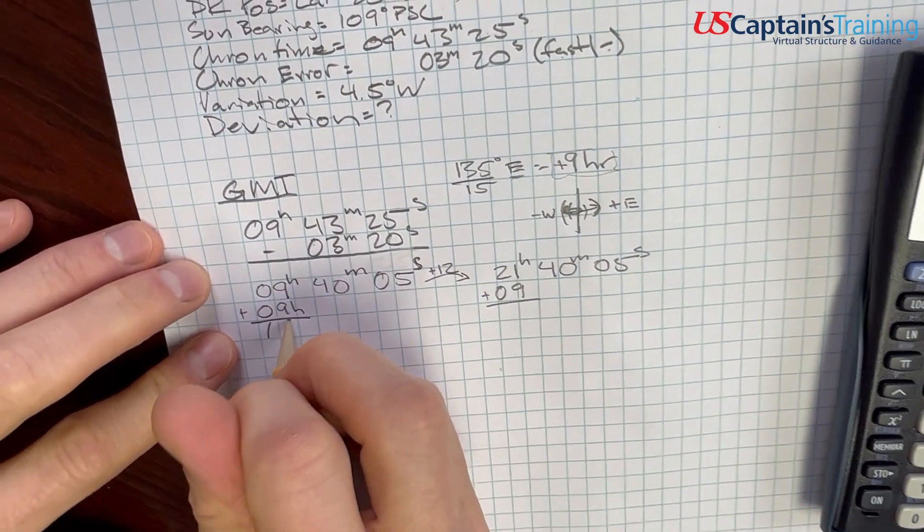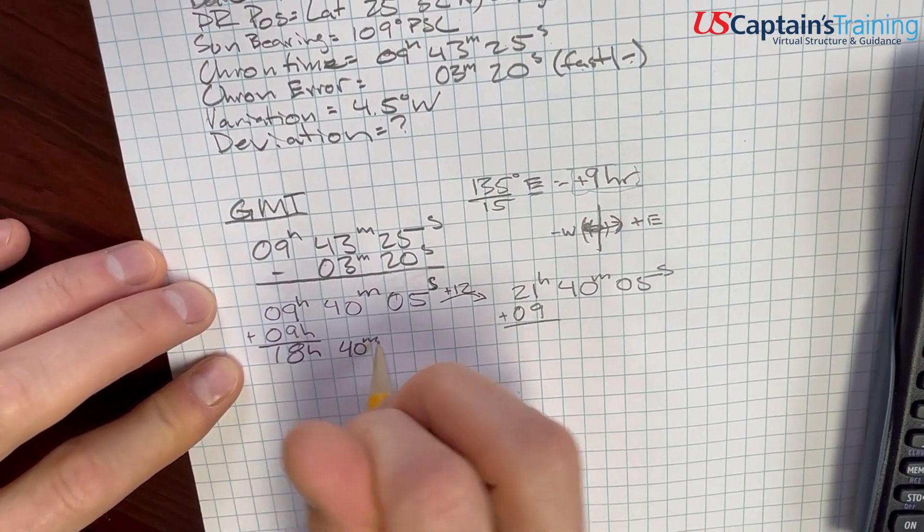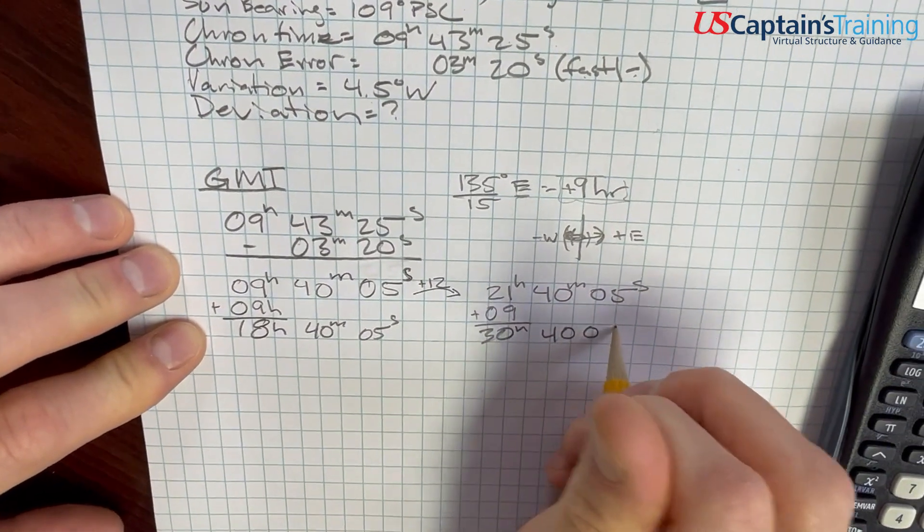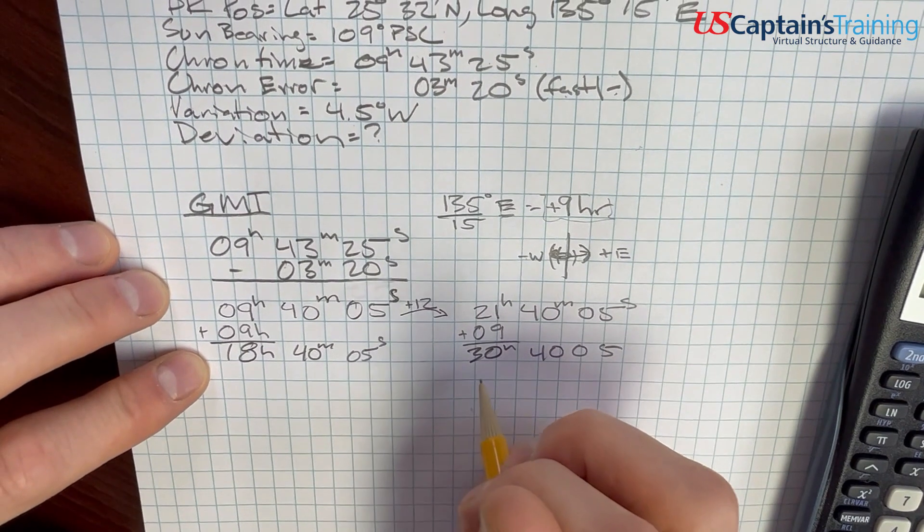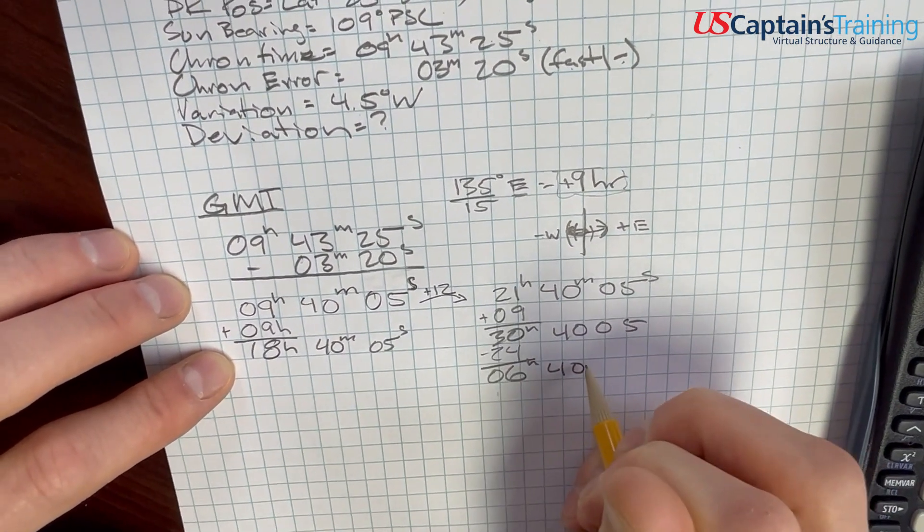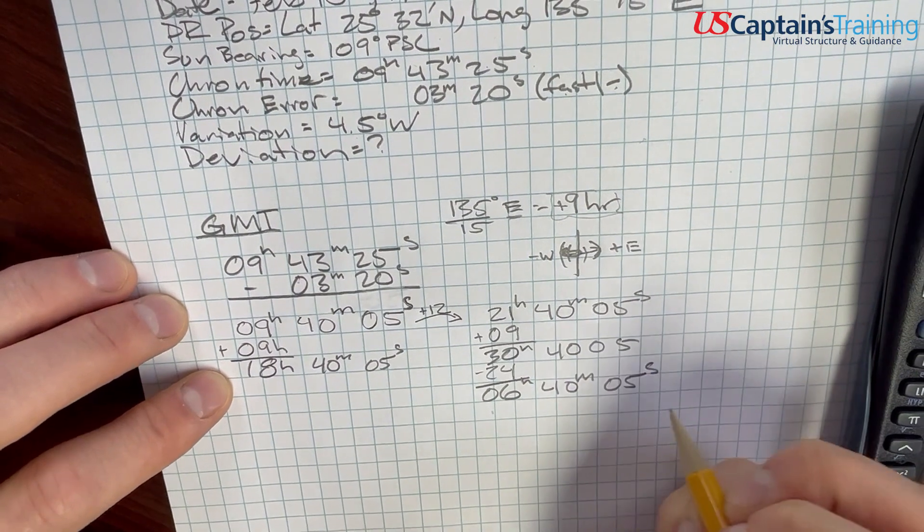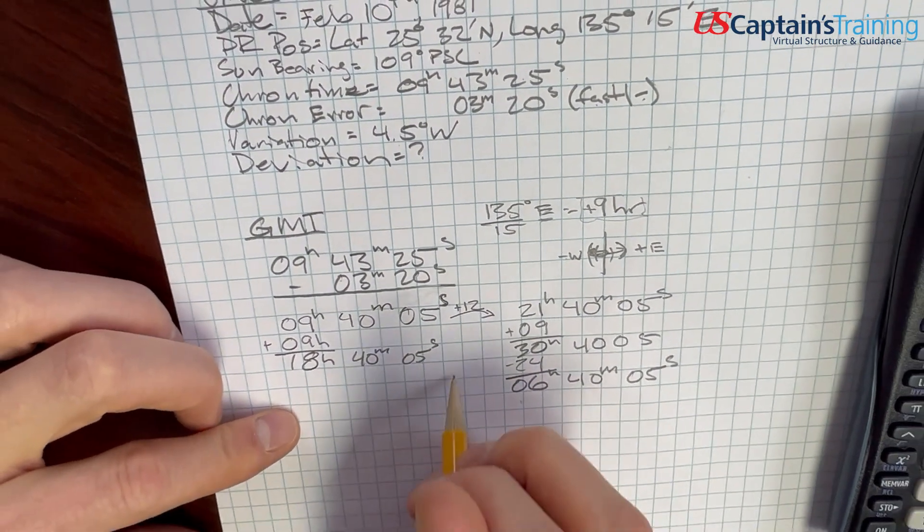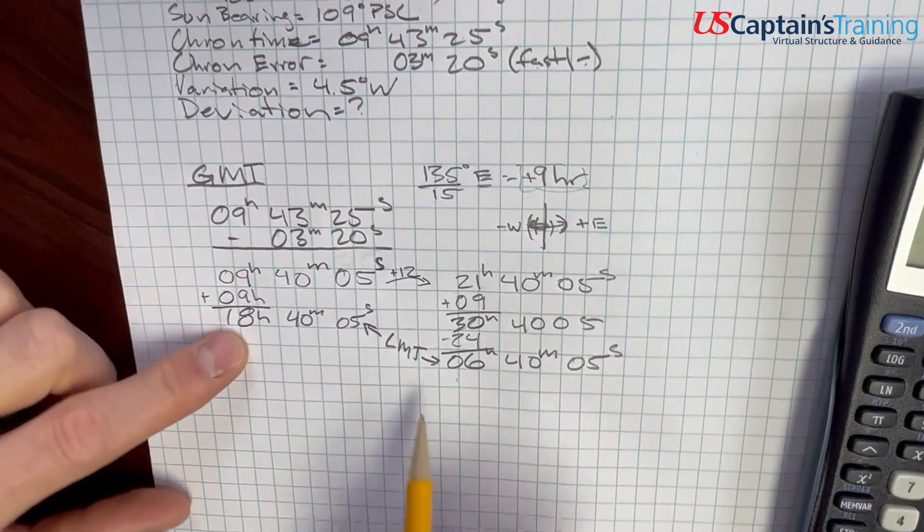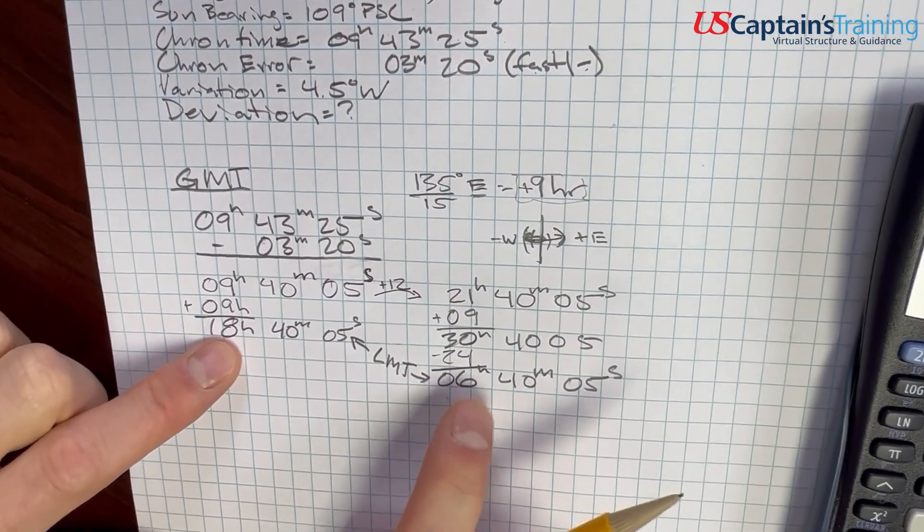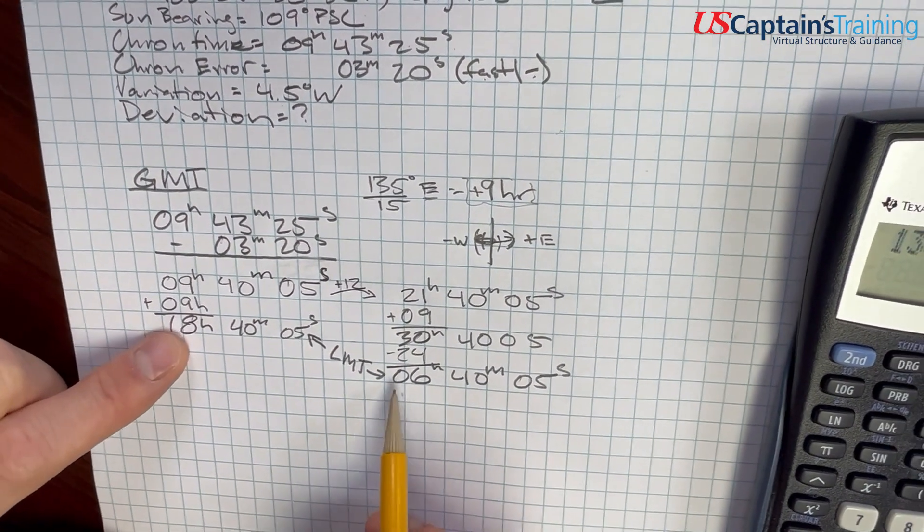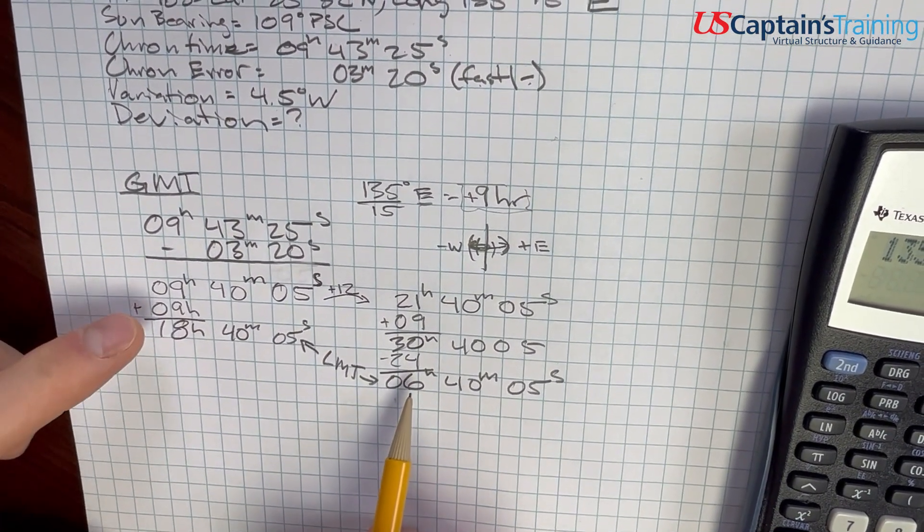If we add 9 hours to these, what happens? So this one is 18 hours 40 minutes 05 seconds. And this is 30 hours 40 minutes 05 seconds. You can't have 30, right? So if you take 24 out of here, you get to 6 hours. This is your approximate local time. These are local mean times. Approximate local means because we didn't account for the minutes. So this is the PM, and this is the AM a day before, a day after. This is actually the most complicated part of the problem.